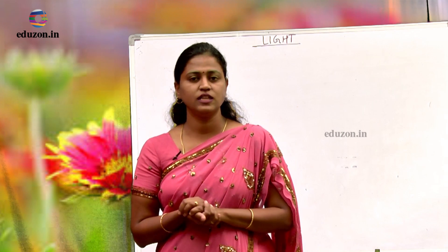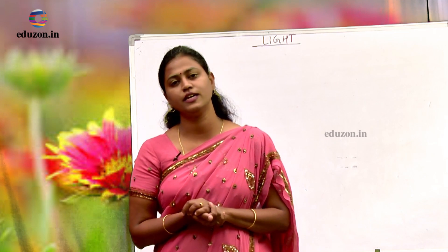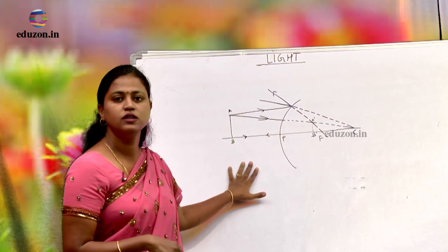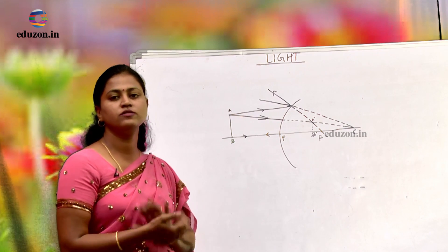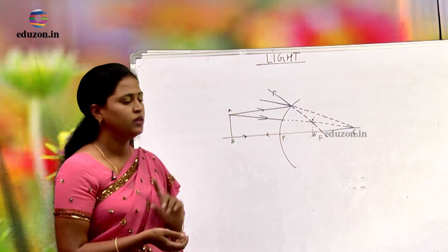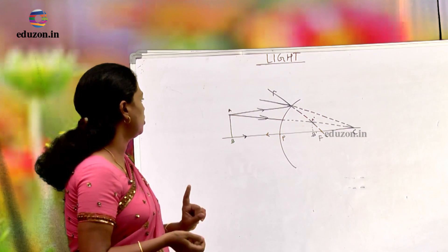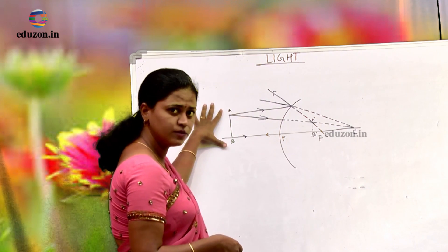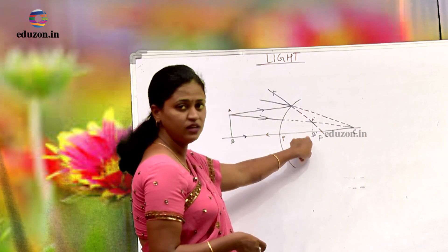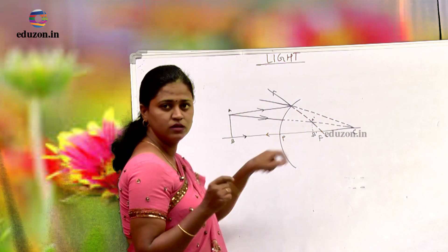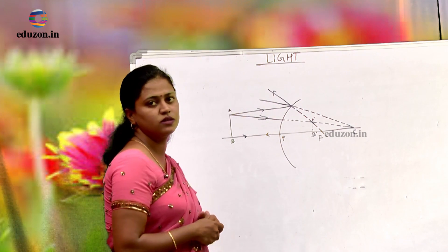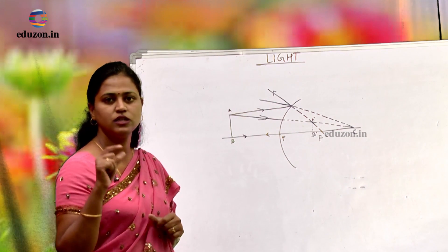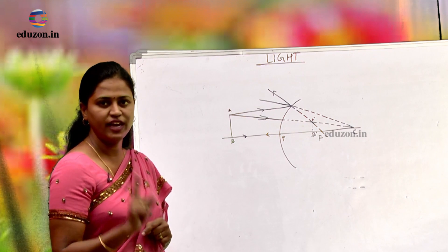To justify this, they have asked us to draw the ray diagram. This is the ray diagram for a convex mirror. The image is always diminished. AB is the object and A dash B dash is the image formed, which is diminished and also erect.